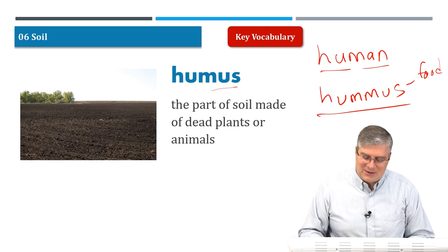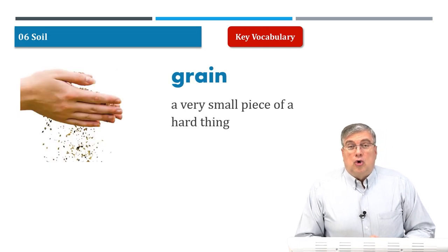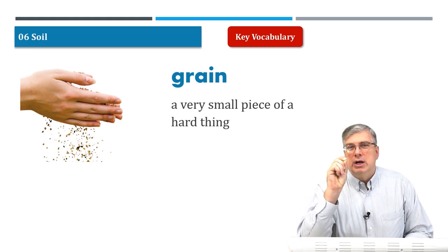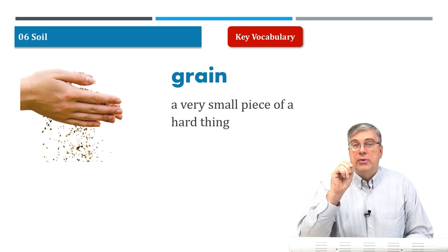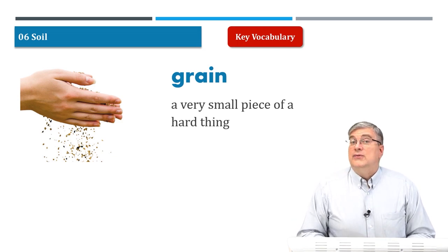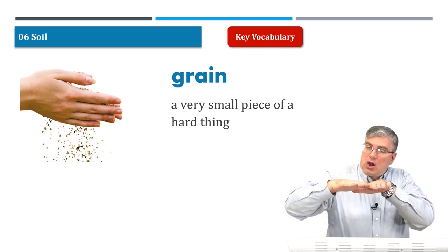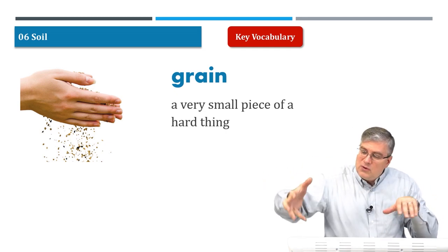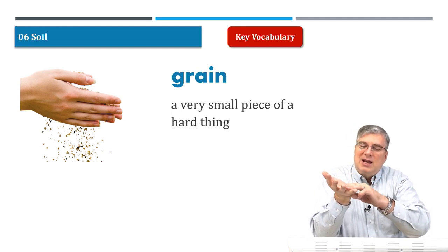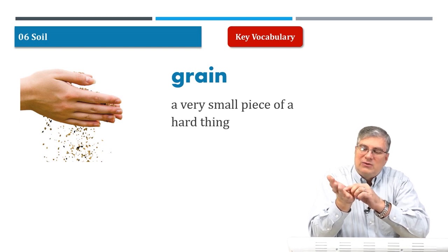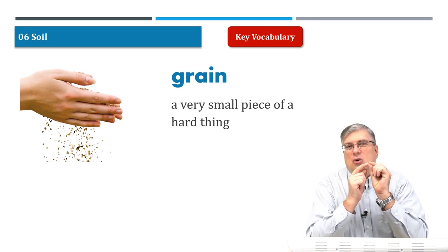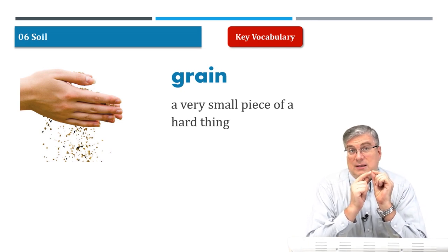Next word: grain. Grain is a very small piece of a hard thing — not a soft thing. A good example: when you go to the beach, you find a lot of sand near the water. If you pick up that sand, it's not all together — it's in little pieces. You let the sand fall through your fingers until just one piece is left. We call that a grain of sand.